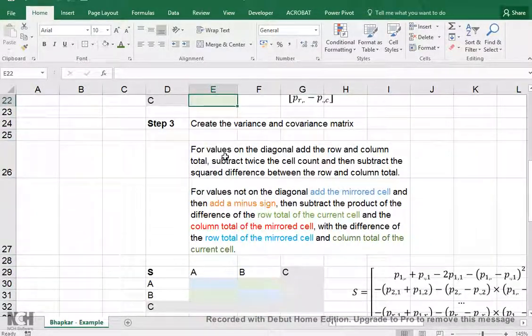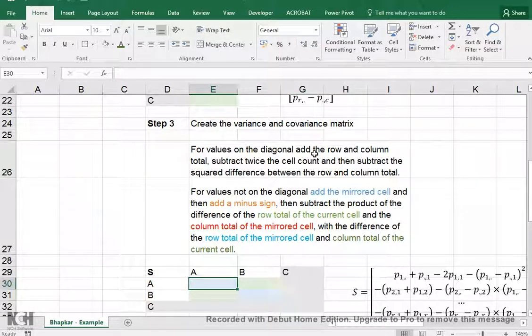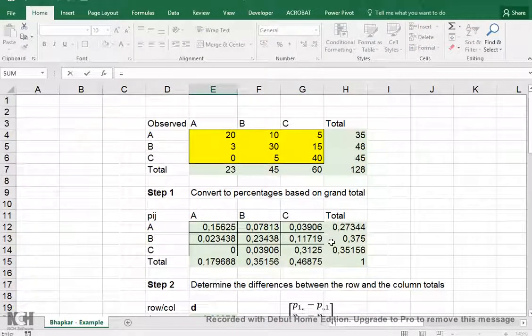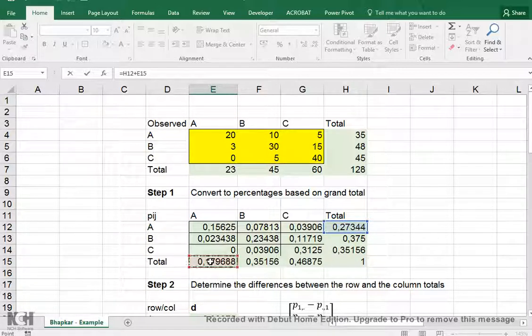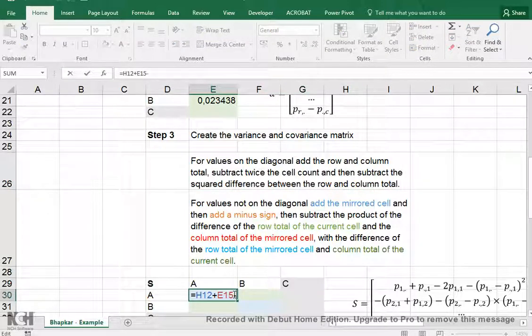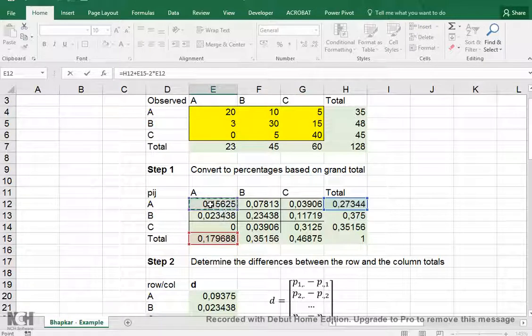Then, the biggest step of them all is to calculate the variance and covariance matrix. Now, this means that we need, on the diagonal, add the row and column total of that cell. So for this one, the AA, we say it's the row and column total that we need to add, which was this is the row total plus the column total. Subtract twice the cell count, so we do minus two times the actual cell proportion, that's this one.